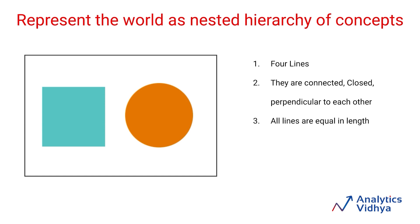Now if you think about it, there could be multiple ways to take a complex concept and break it into simpler concepts. So how would a model know what the right representation is? This is where the beauty of deep learning comes into play. In case of deep learning, the model builds these simple concepts and representations by itself using the training data.